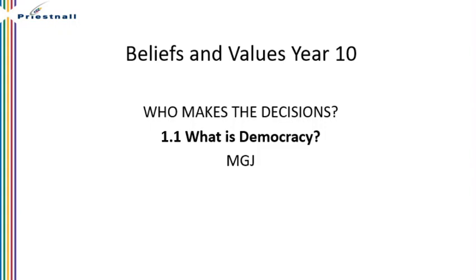Hello ladies and gentlemen, welcome to Beliefs and Values Year 10 lessons for Pre-Small High School. This is the first of the online lessons that we're going to be looking at, so you've got the opportunity to use this video to help you as we go through the topic. We're going to begin with looking at who makes decisions in the UK. We're going to start by thinking about what democracy is — that's going to be our first topic.